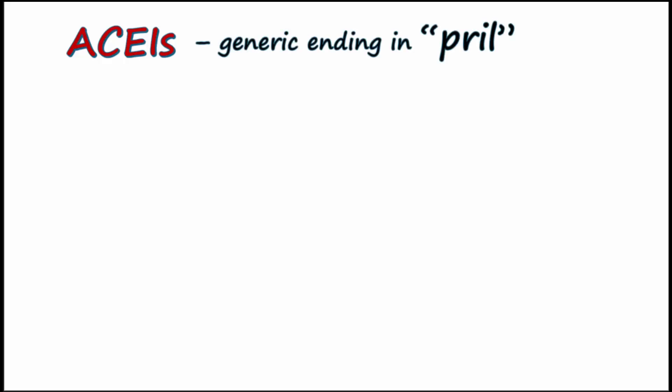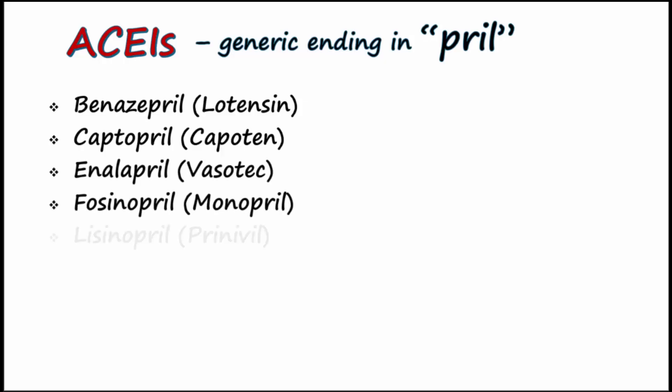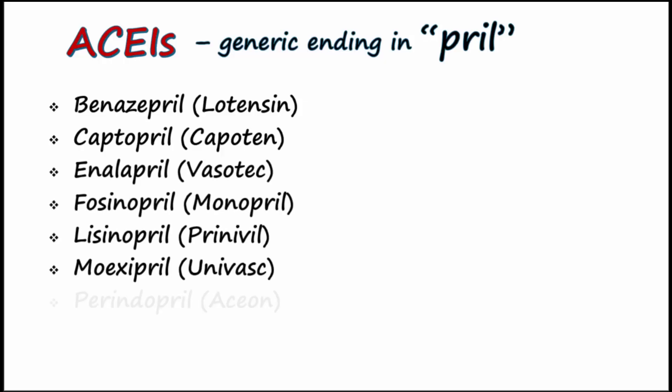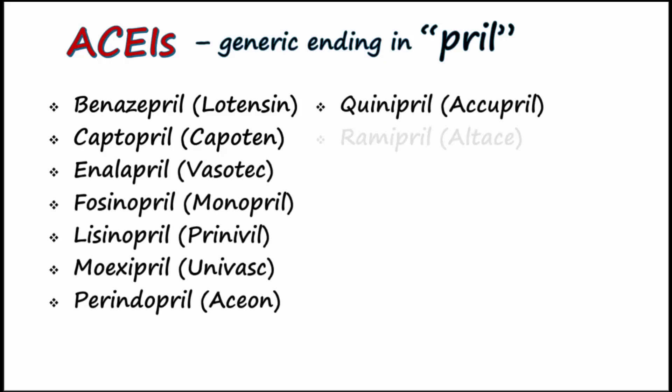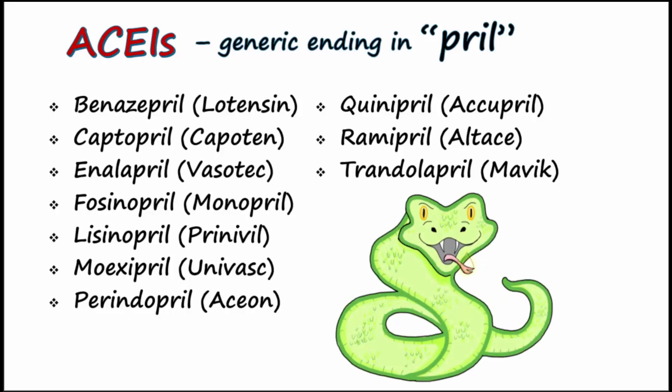All of the generic names of ACE inhibitors end in -PRIL. There are many examples, but notice that they all end in PRIL. The ACE inhibitor drugs originally came from the venom of a pit viper.